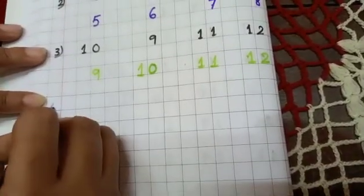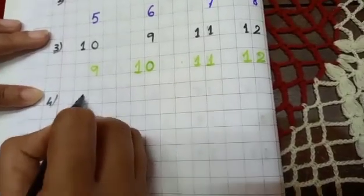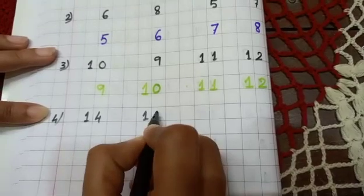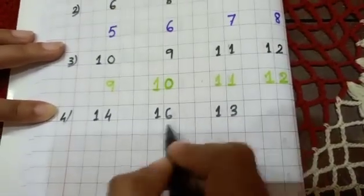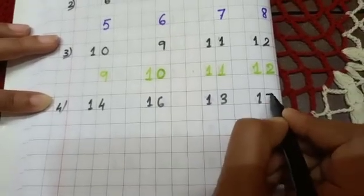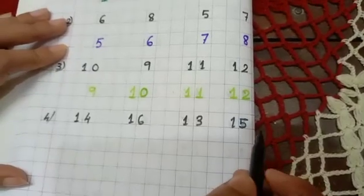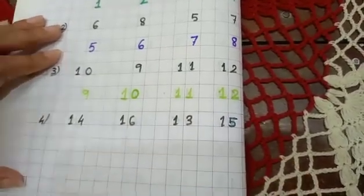Now 4. Now I am writing the numbers. 14, 16, 13, 17. Okay. Children, it is not 17, it is 15. It is 15. Okay. 1, 5, 15. So now rearrange.